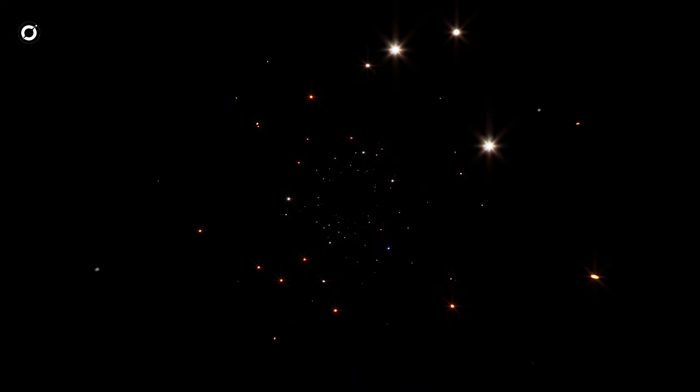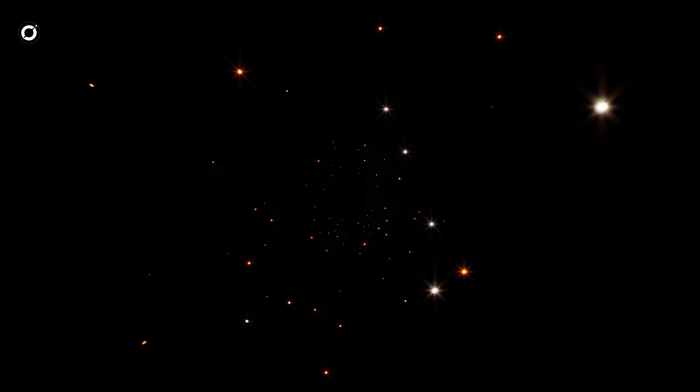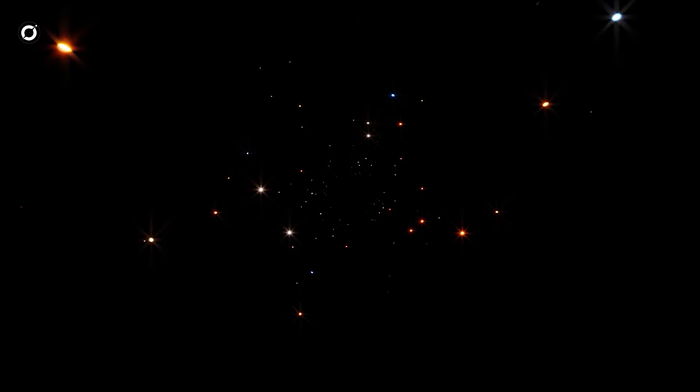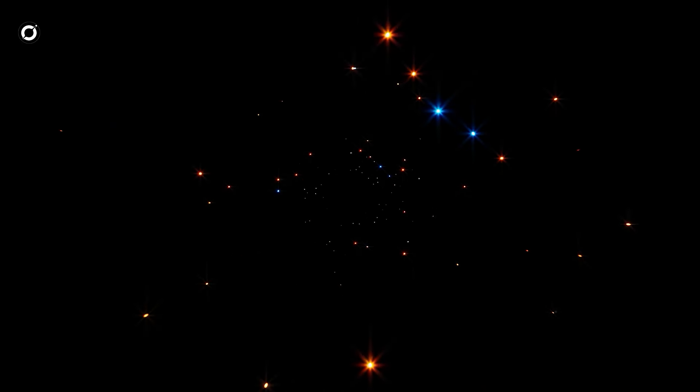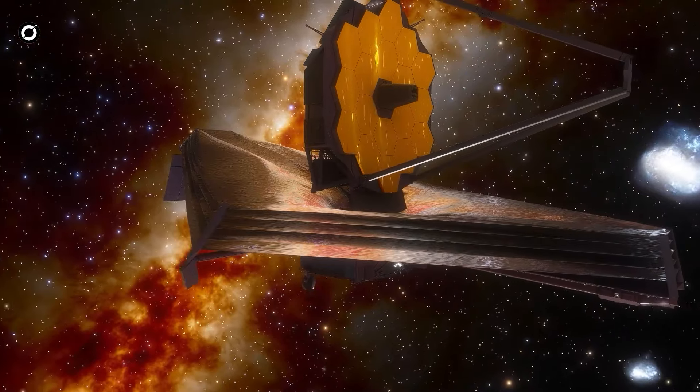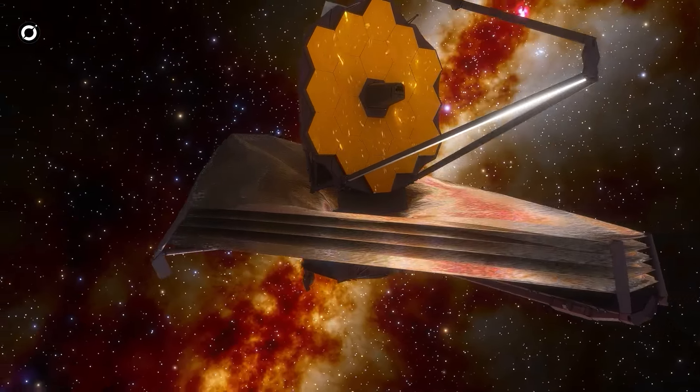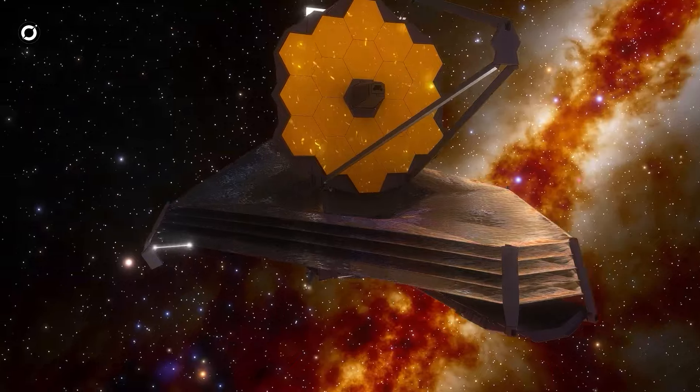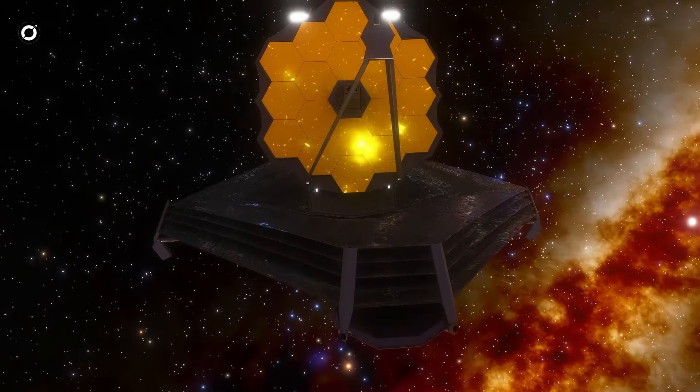Thanks to gravitational lensing, this tiny galaxy appeared 20 times brighter than it would have appeared. Mind you, this is apparently the first time it was possible to look into most of the way back to the Big Bang, and James Webb telescope with its galaxy-hunting abilities has made it look easier than ever before.